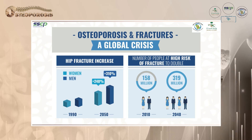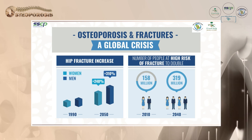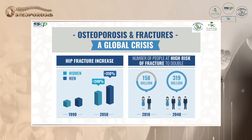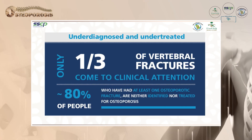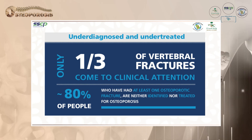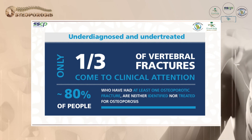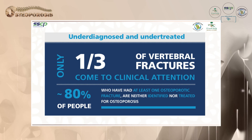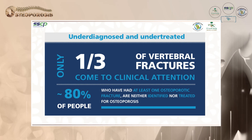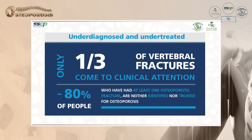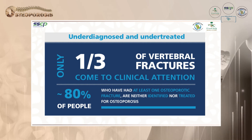By 2050, 240% more females will have hip fractures and 310% more males will have hip fractures. Only a third of vertebral fractures come to clinical attention — two-thirds are unknown. And 80% of people who have had at least one osteoporotic fracture are neither identified nor treated for osteoporosis, which is a major issue we are facing.